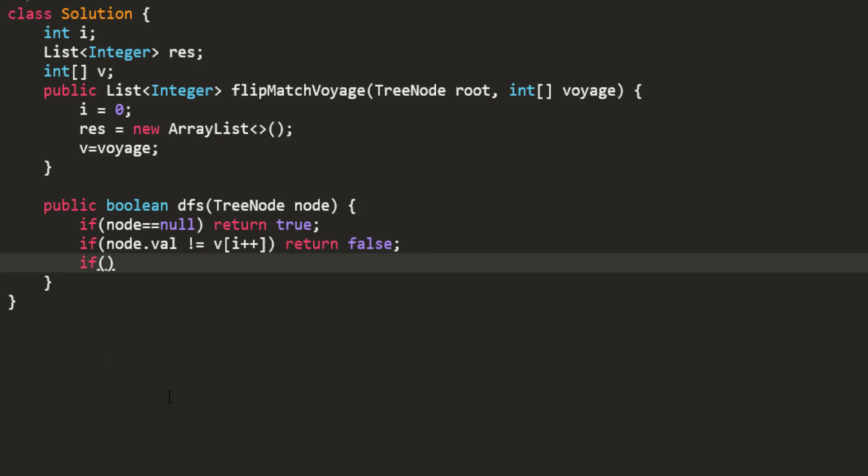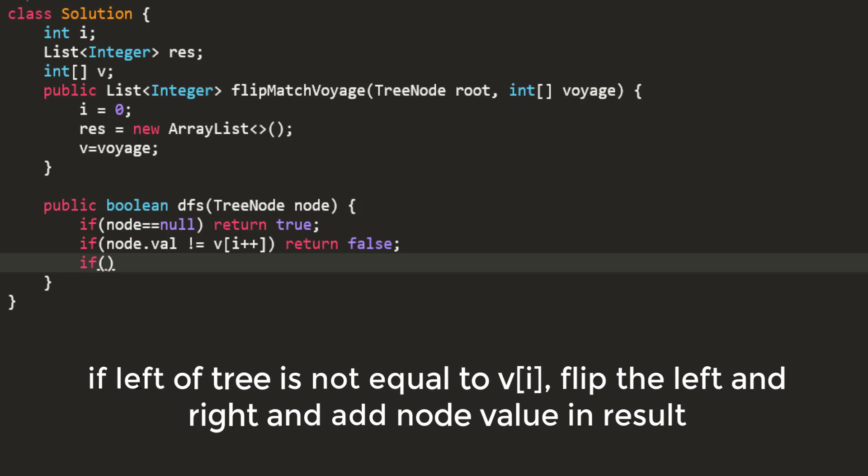Now we'll check for the left because our pre-order traversal says that once you have visited the node you need to first visit left. Let's check whether the left of the input tree is equal to the left of my desired tree. If these values are not equal we need to flip those values and add it in the result.